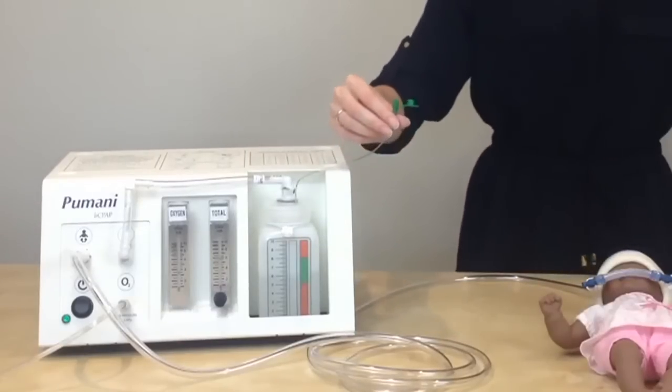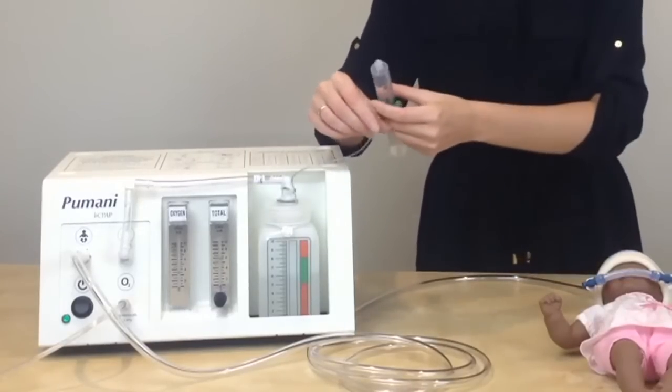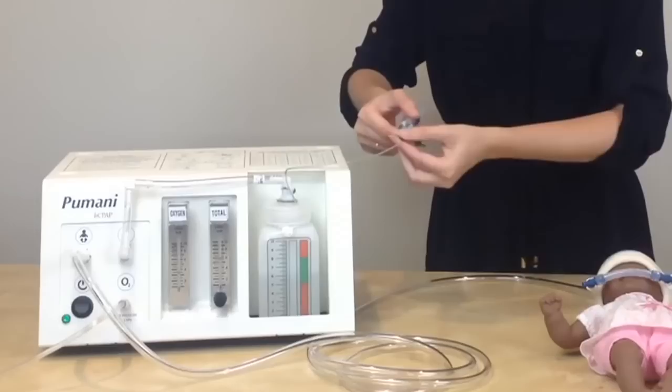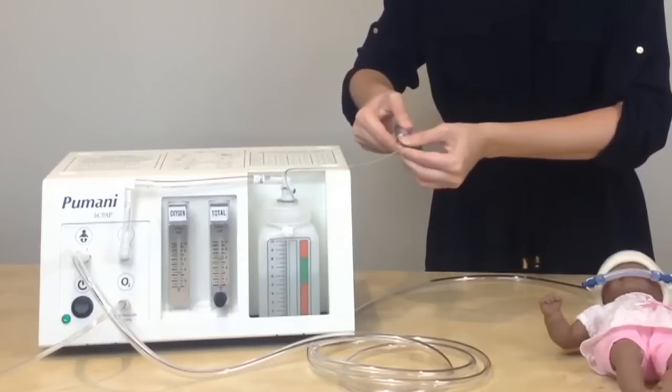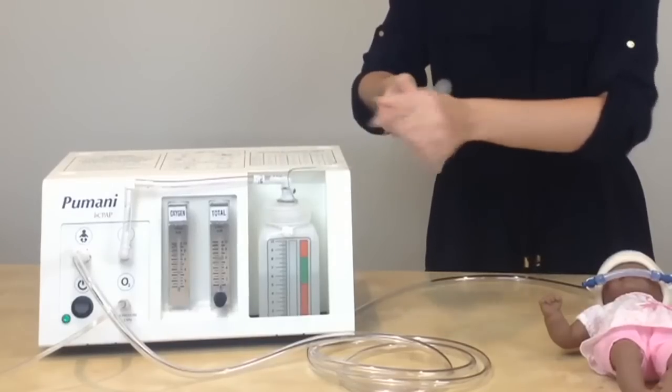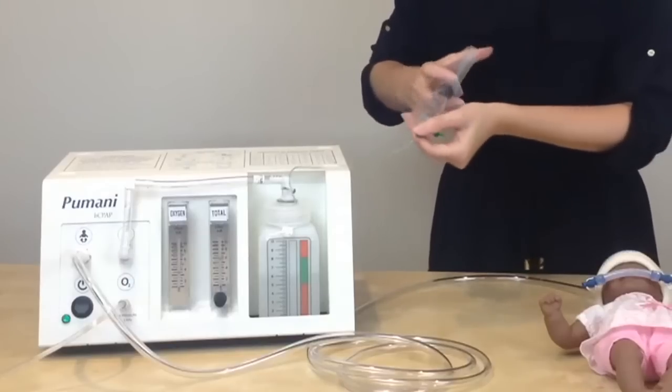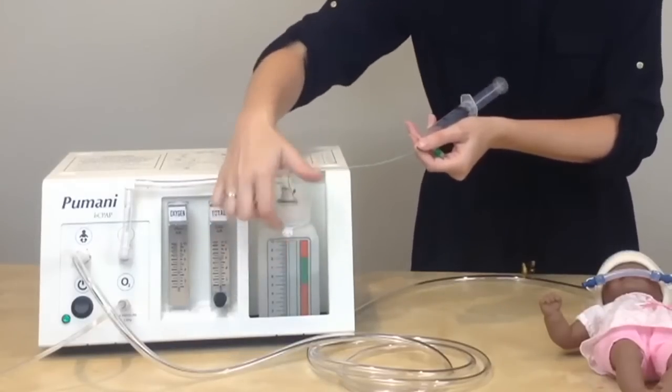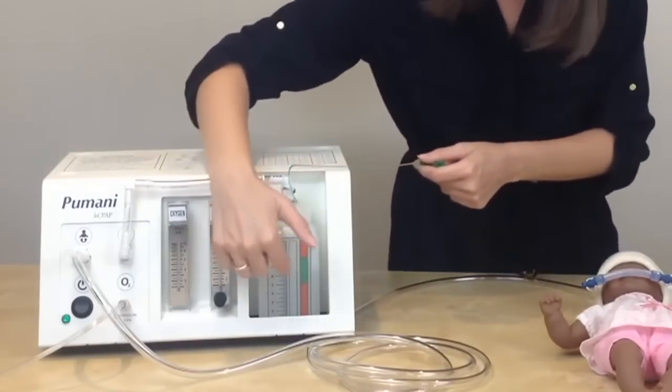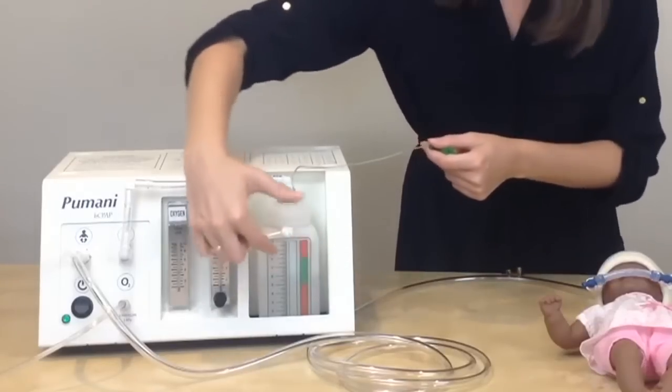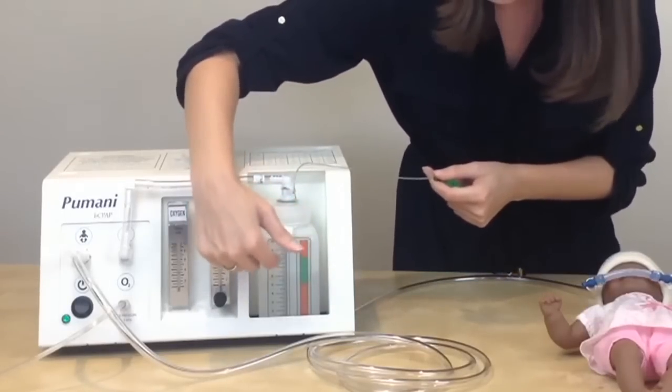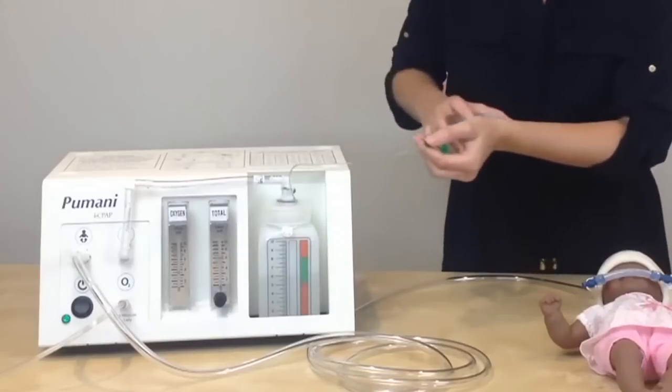And you will take a syringe filled with water and you will inject water into the bottle through the tube up to the level of pressure that you want to apply. So right now the water is at six and I am choosing to increase it to seven centimeters of water.